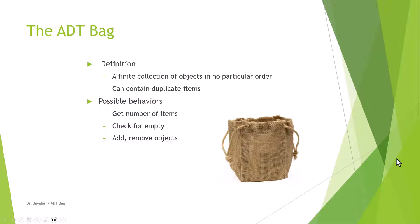Now let's take a look at a definition of ADT-Bag. The definition says that it's a finite collection of objects in no particular order, and it can contain duplicate items as well. The possible behaviors it has: we can get the number of items in there, we can check for empty, add, and remove objects from it.